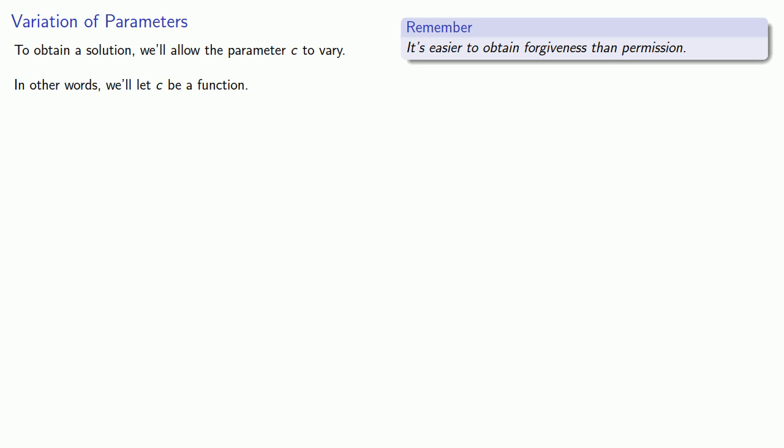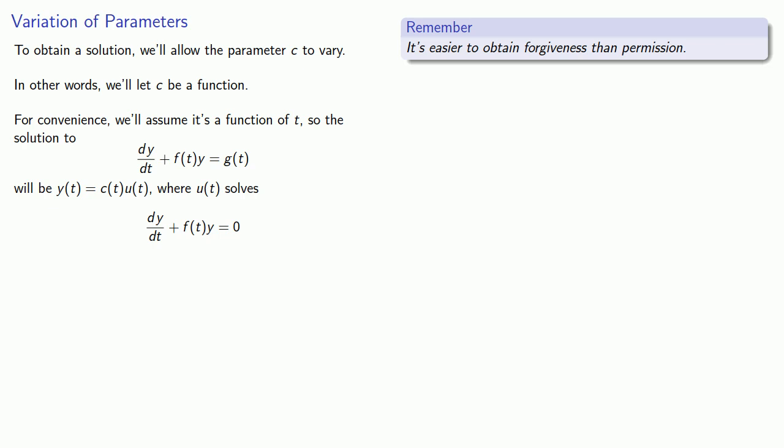Now, since we don't want to work too hard to get our solution, for convenience, we'll assume that it's a function of t. So our solution to the differential equation will be y(t) = c(t)·u(t), where u(t) solves our homogeneous differential equation. And now we just need to find c(t).